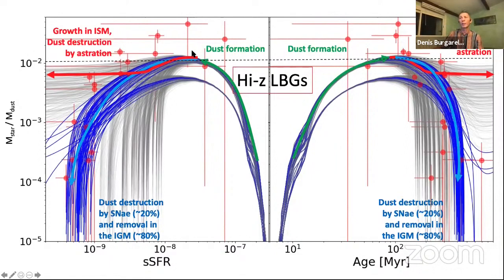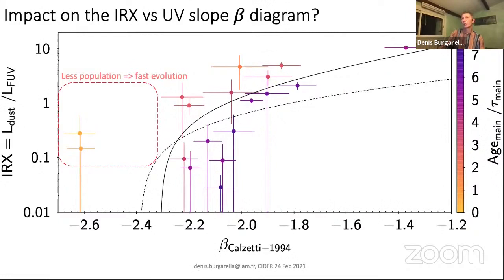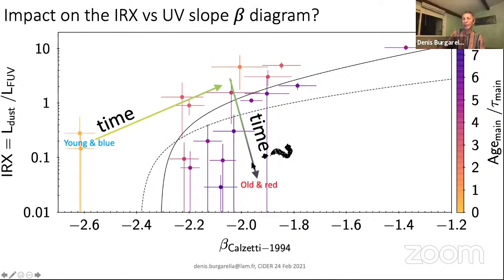If we come back to this diagram, you see the formation here—we form dust and the dust is destroyed. Some objects are picked when they're at the top and also in other phases. Now we look at the IRX-beta diagram and you get the same thing: young blue objects, and then old and red. These objects are old and red because that's the evolution, very fast.